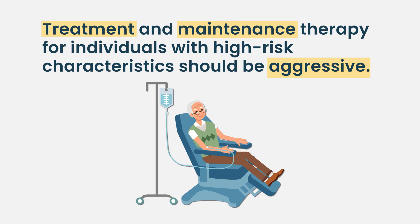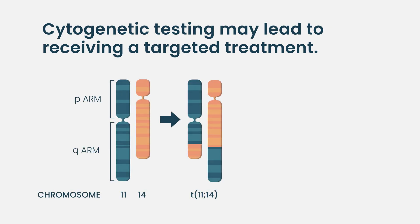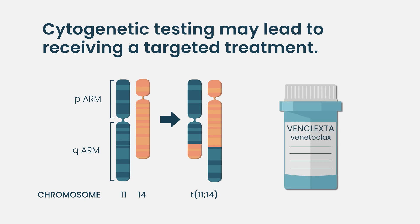There are other markers that can predict treatment response. For example, the t(11;14) translocation can predict response to venetoclax, a BCL-2 inhibitor. Patients with translocation of chromosomes 11 and 14 typically have overexpression of BCL-2 protein in their myeloma cells, which renders them more susceptible to the effects of venetoclax.